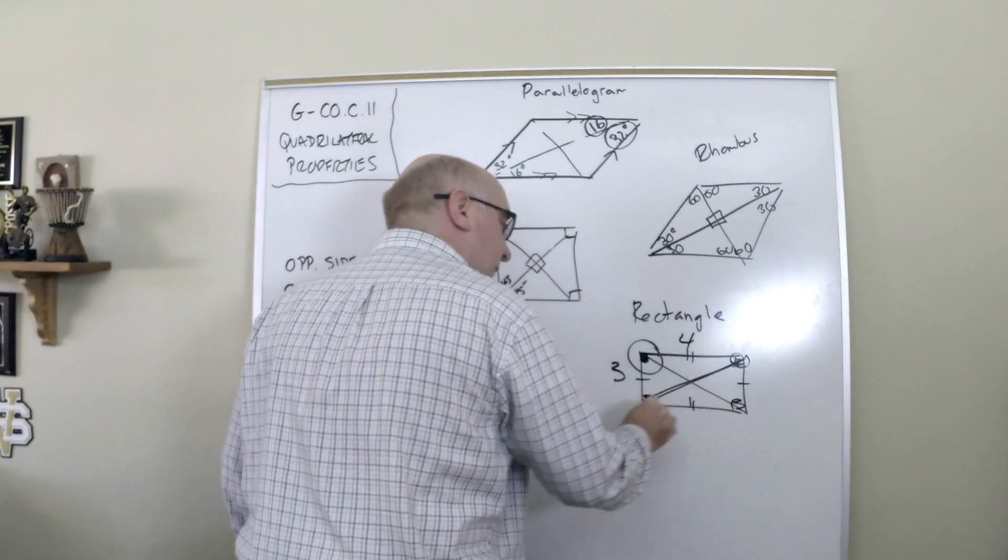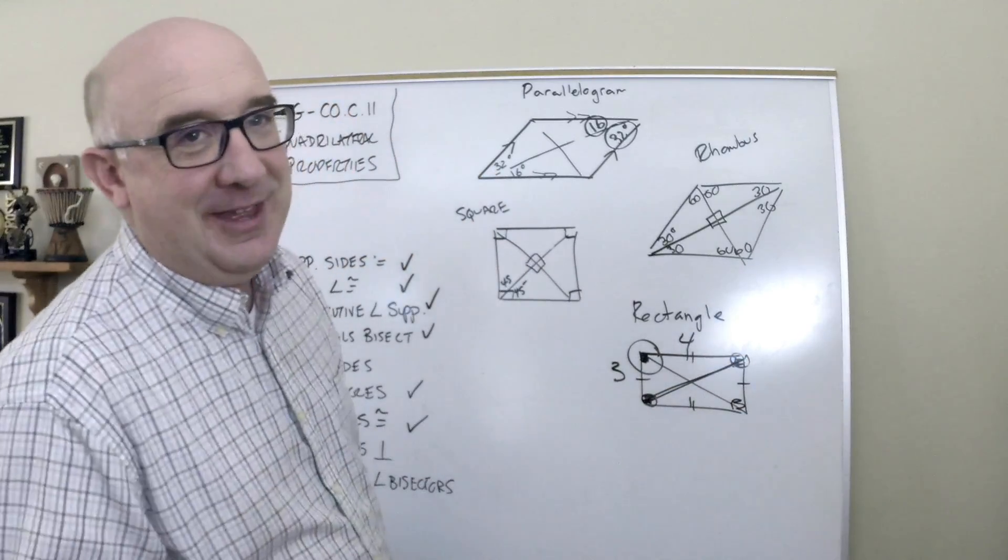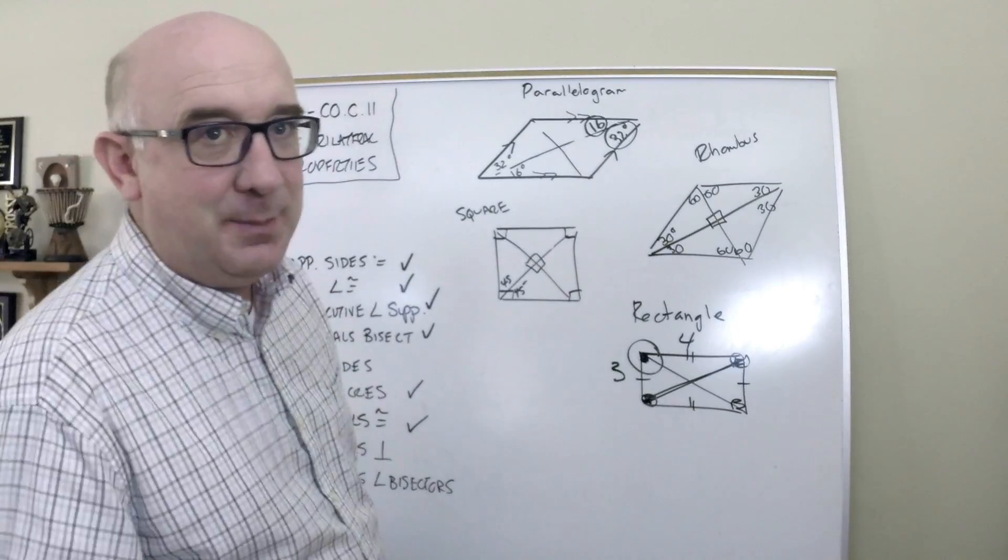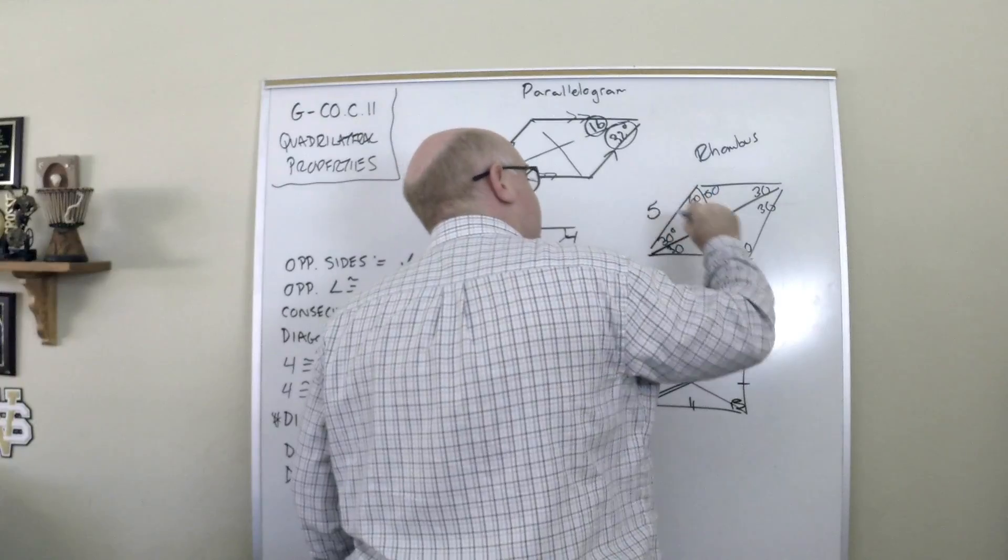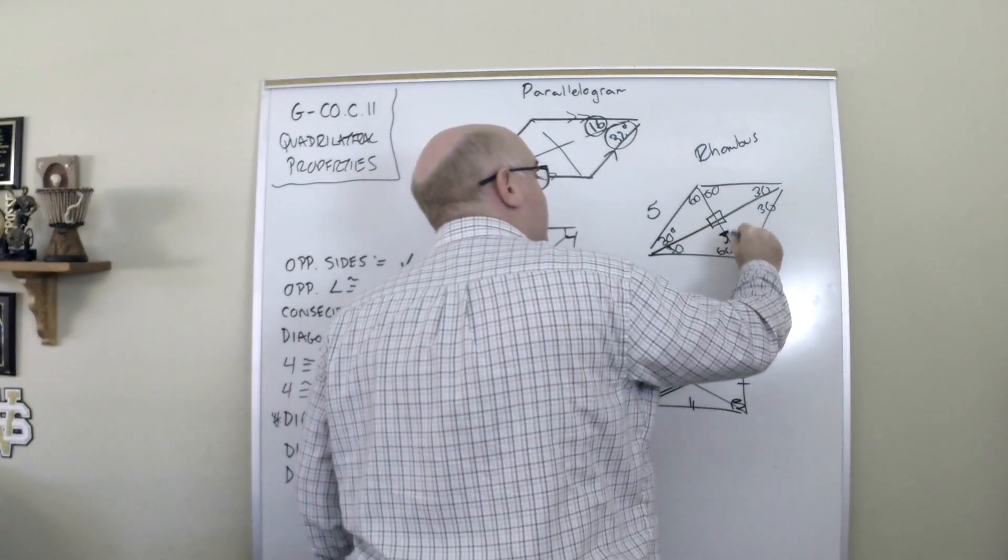You got to use the Pythagorean theorem. Remember that, that's a big tip. They might do the same thing over here. They might say this is five, this diagonal is six.